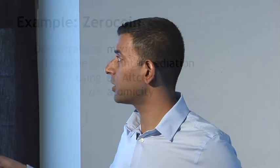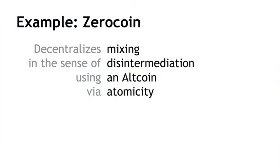We can even consider Zerocoin through this lens. Zerocoin decentralizes the notion of mixing — instead of a centralized mixing service where you put in your coins and hope to get them back, it's decentralized in the sense of disintermediation: there is no mixing intermediary anymore, and the mixing is accomplished purely through cryptography enforced by math and consensus. It's done using an altcoin, not quite compatible with Bitcoin without a fork. The security property is atomicity: burning a base coin and getting a Zerocoin in exchange are atomically coupled through the same transaction, and the same goes for later redeeming a Zerocoin — accomplished through zero-knowledge proofs.